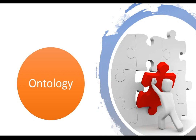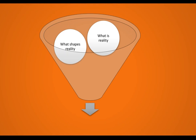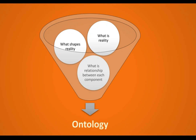Ontology tells you about the knowledge and what is happening. For example, if you are planning to solve any situation or any problem, it gives you an idea of what that problem is and what the possible solutions to that problem are. Ontology gives you answers to three basic questions: What is reality or knowledge? What shapes that knowledge or what are the events that shape that reality? And what is the relationship between each of these components which shapes the reality or forms the knowledge?